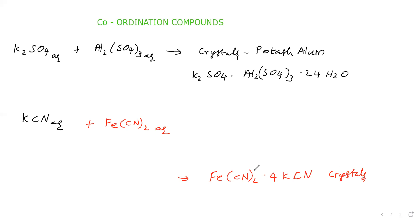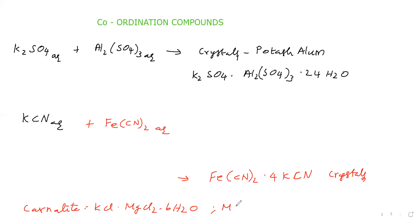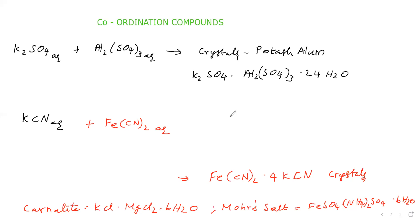So we have addition compounds or molecular compounds. Some more examples: Carnallite is a magnesium ore with formula KCl·MgCl₂·6H₂O. Then Mohr's salt is FeSO₄·(NH₄)₂SO₄·6H₂O. These are all addition compounds or molecular compounds.